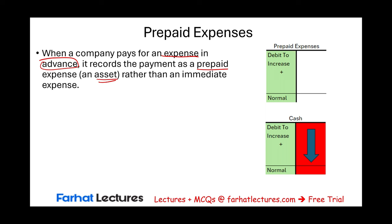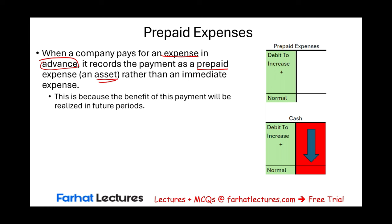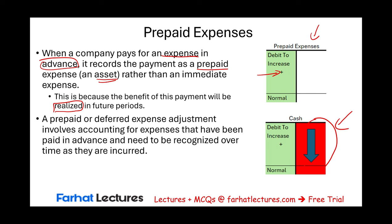The reason we do this is because when we pay for this item, the benefit from this payment will be realized in the future. So for now we are buying something that will generate future benefit — we call it prepaid. When we purchase a prepaid we debit the prepaid and credit cash, or credit accounts payable if we don't pay for it now. A prepaid is also called a deferred expense. These adjustments involve accounting for expenses paid in advance that need to be recognized over time as they are incurred.